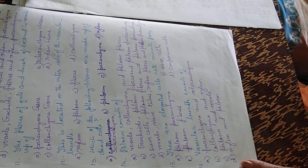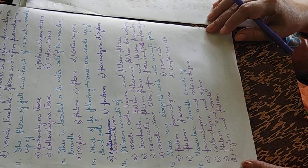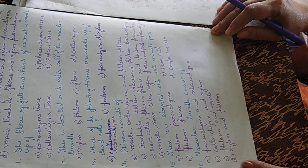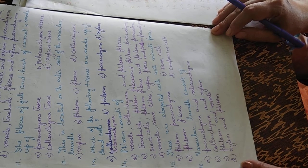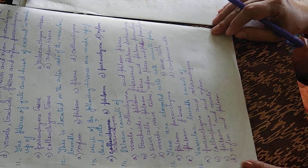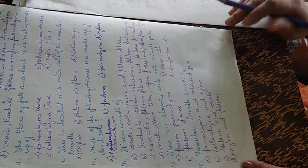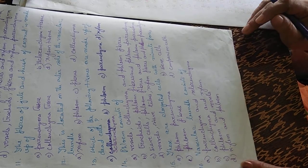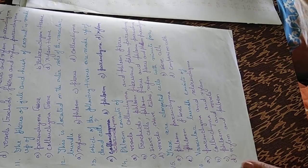Sieve cells are elongated cells with minute pores. Sixteenth question: vascular bundle consists of parenchyma and sclerenchyma, colenchyma and xylem, phloem and vessels, or xylem and phloem. The answer is D — xylem and phloem.